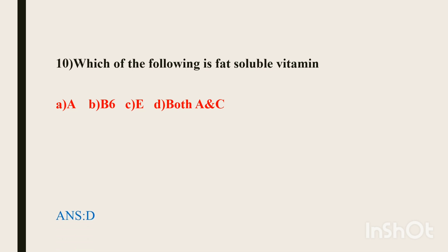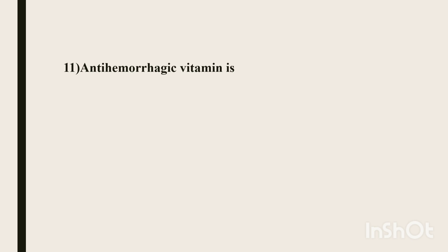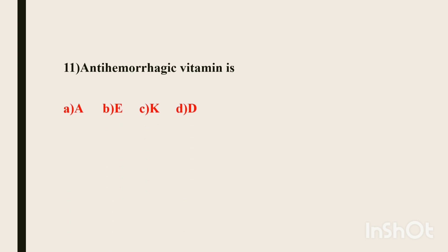Eleventh question. Anti-hemorrhagic vitamin is — Hemorrhage means blood flowing out. Anti-hemorrhagic means helping blood to clot so that blood does not get wasted. Vitamin K helps with clotting, so vitamin K is the anti-hemorrhagic vitamin.